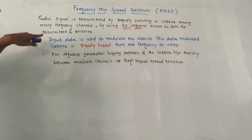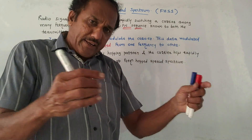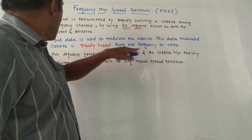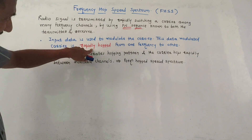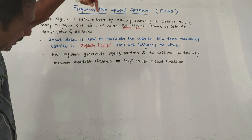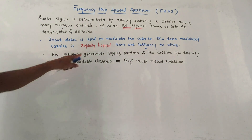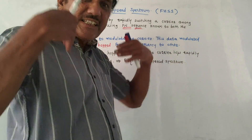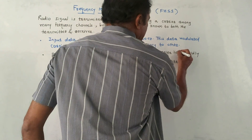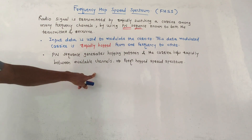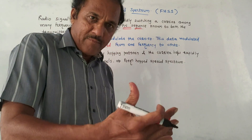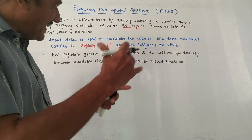The input data is used for the modulation of the carrier signal. Such a carrier signal is called a modulated carrier. This modulated carrier is rapidly hopped from one frequency to another. A PN sequence generator generates the hopping pattern — that is, by which logic and in which sequence the hopping will occur — and accordingly that carrier will be hopped rapidly between all available channels.